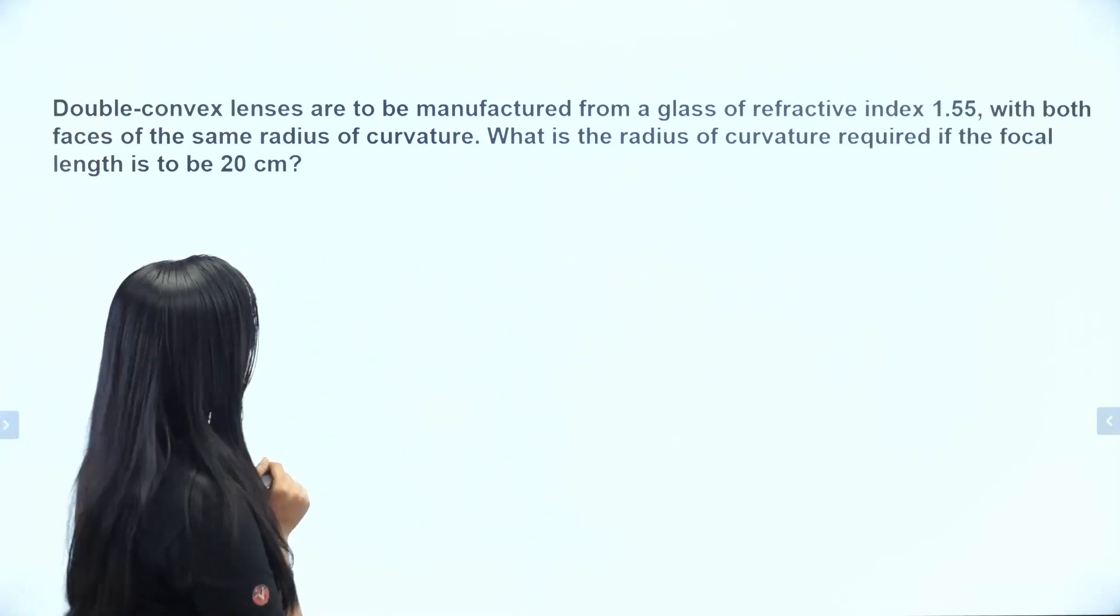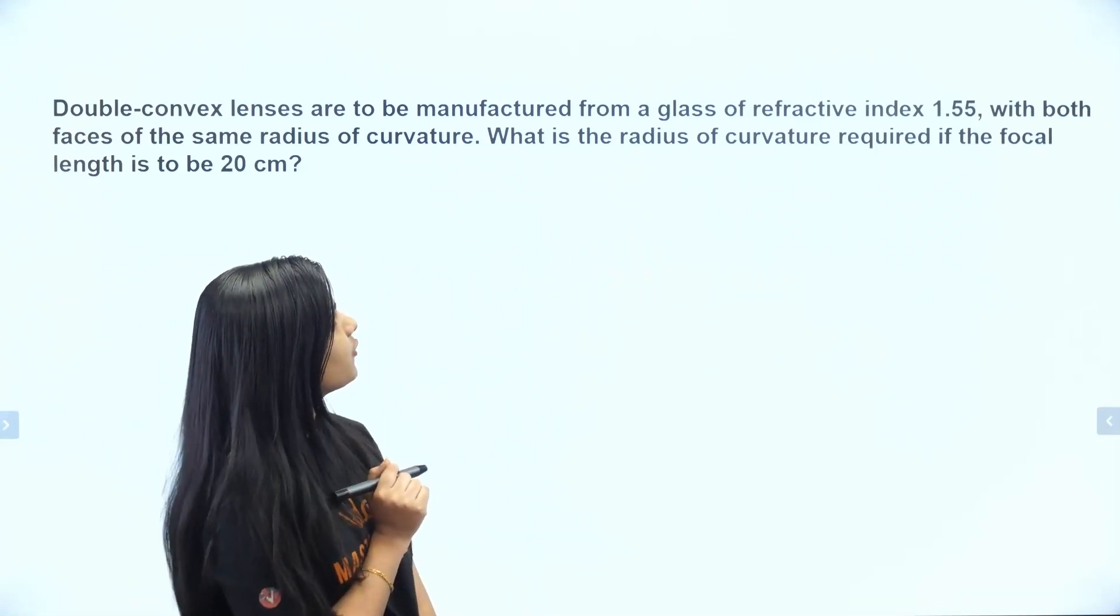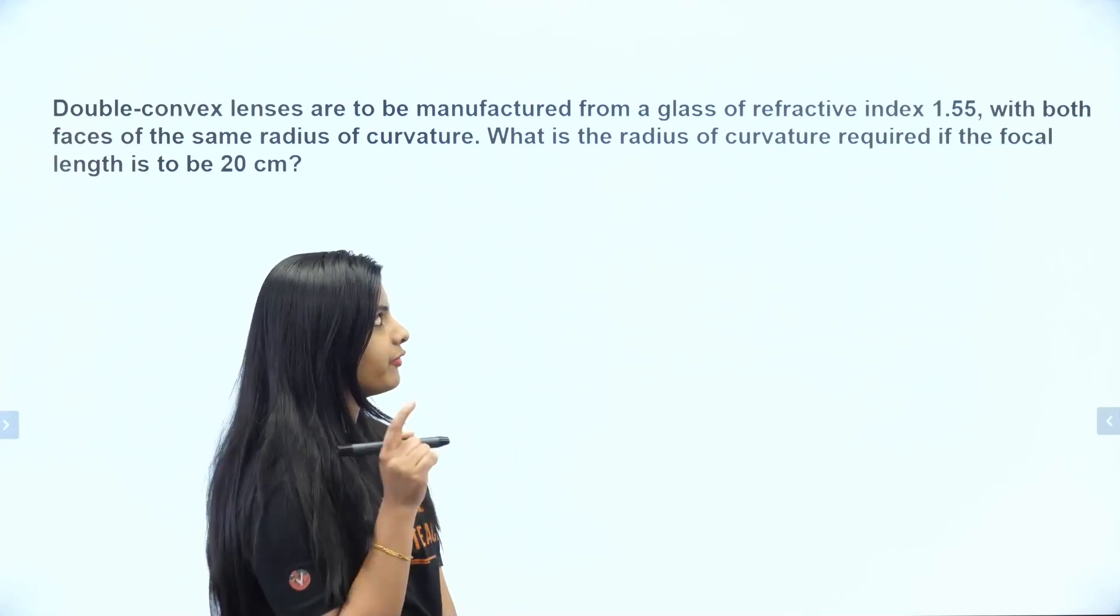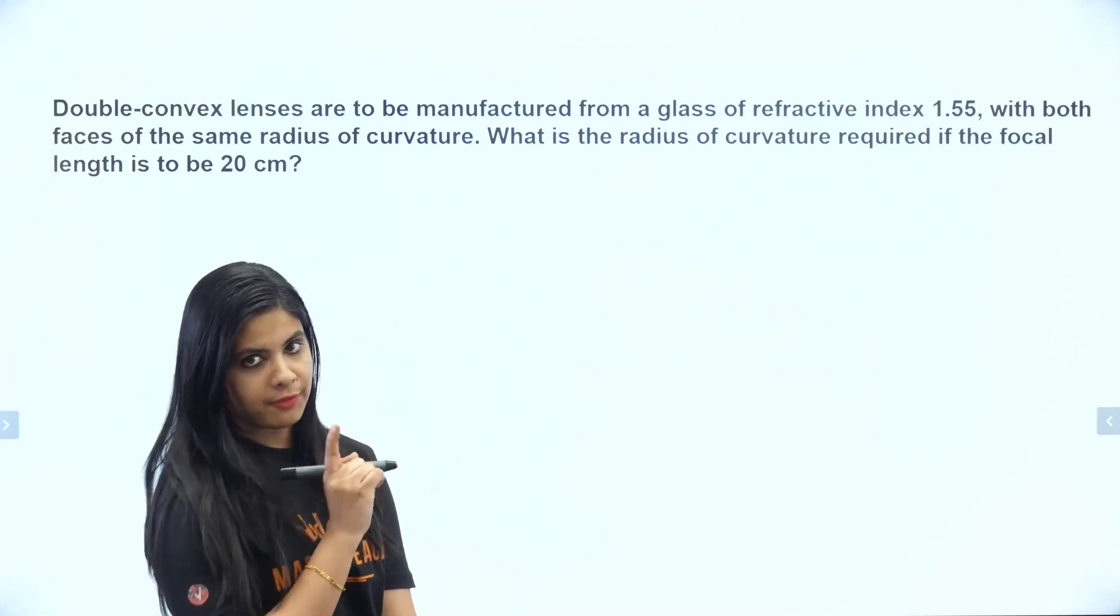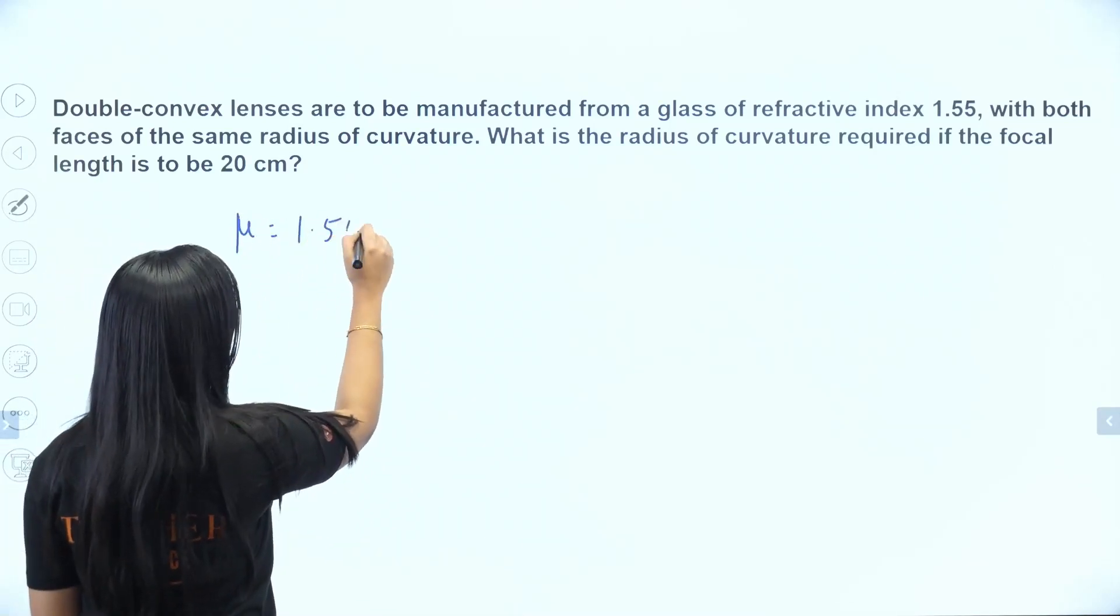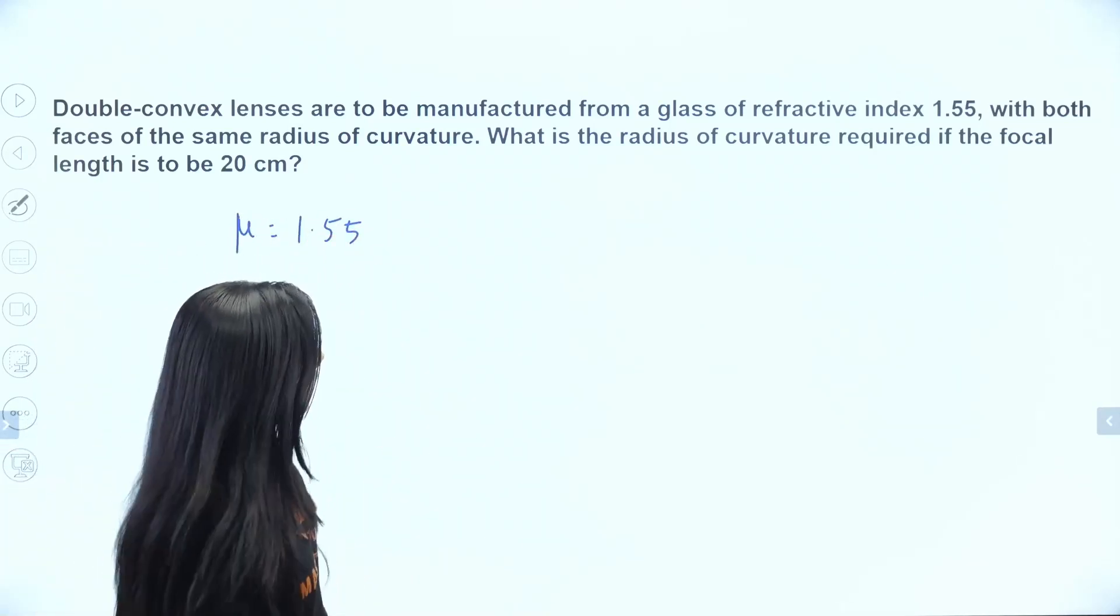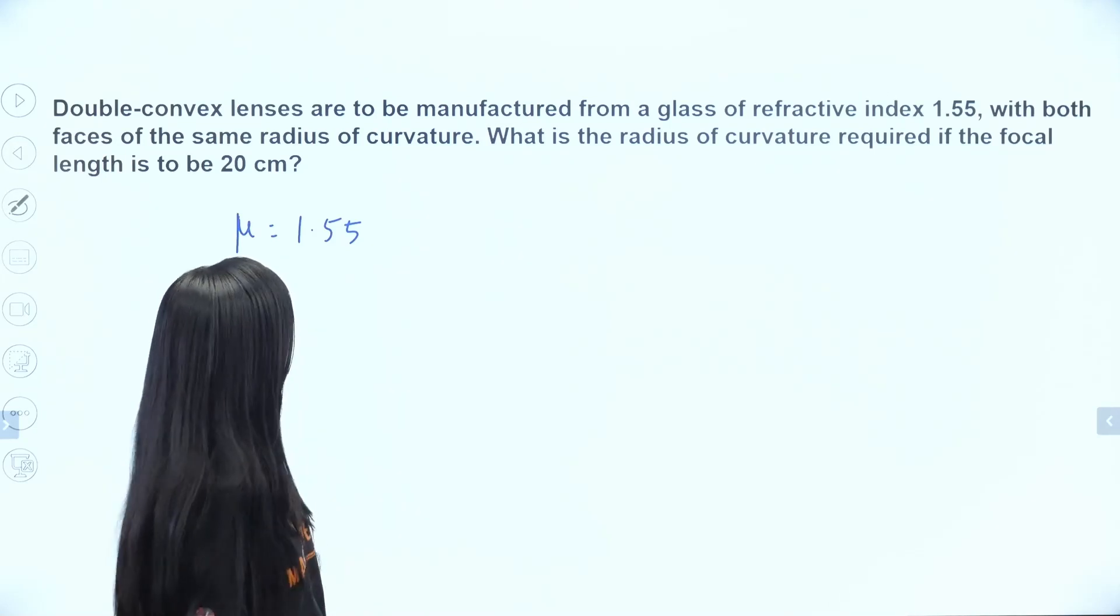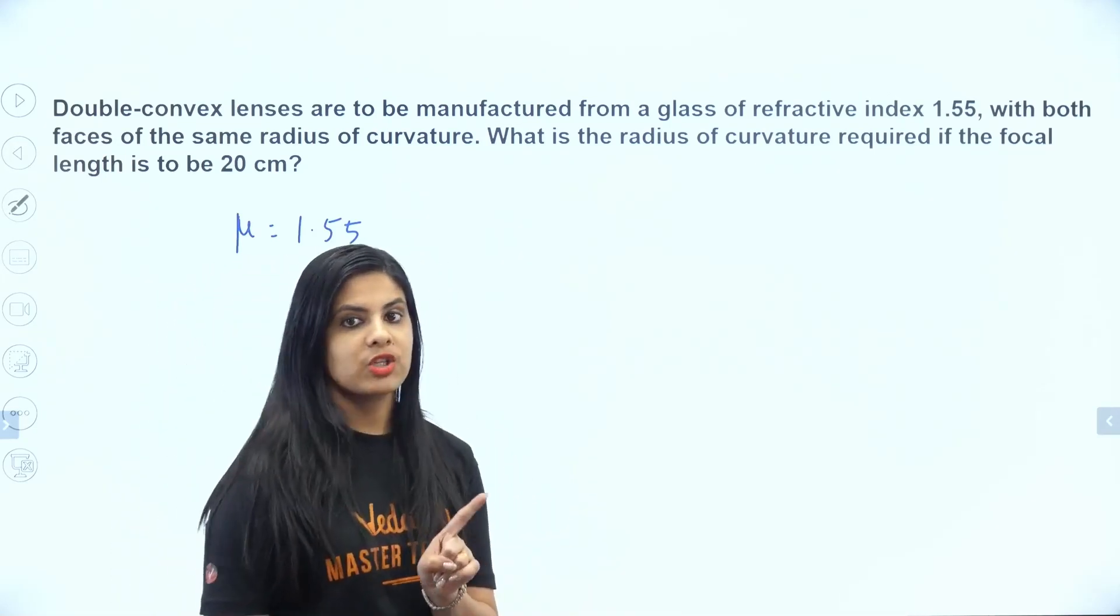The question: double convex lenses are to be manufactured from a glass of refractive index 1.55. So the refractive index mu is 1.55, with both faces having the same radius of curvature.